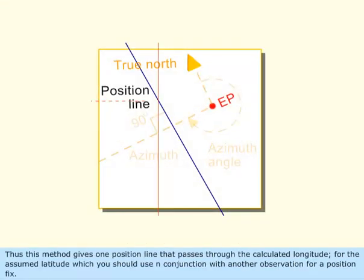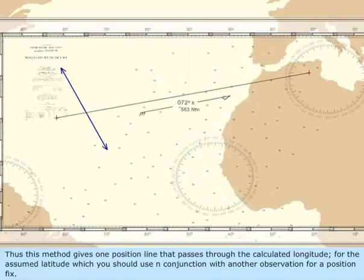Thus, this method gives one position line that passes through the calculated longitude for the assumed latitude which you should use in conjunction with another observation for a position fix.